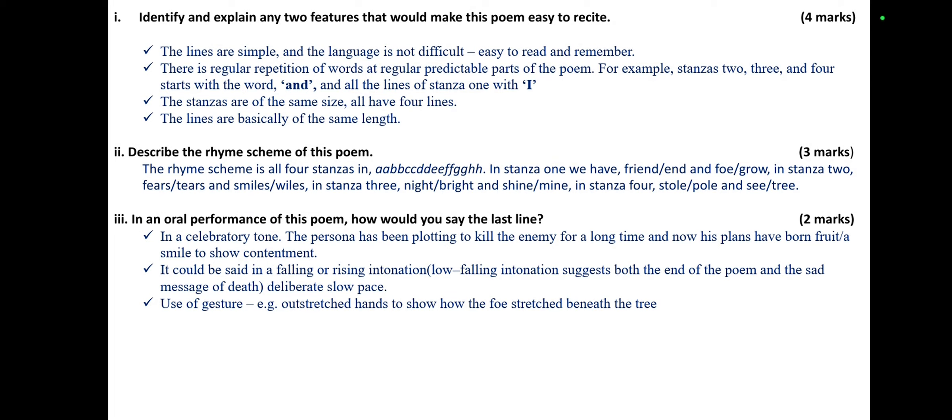In stanza one, we have the couplet of 'friend' and 'end', and also 'foe' and 'grow'. In stanza two, we have 'fears' and 'tears', and 'smiles' and 'wiles'. In stanza three, we have 'night' and 'bright', and 'shine' and 'mine'. In stanza four, we have 'stall' and 'pole', and 'see' and 'tree'.